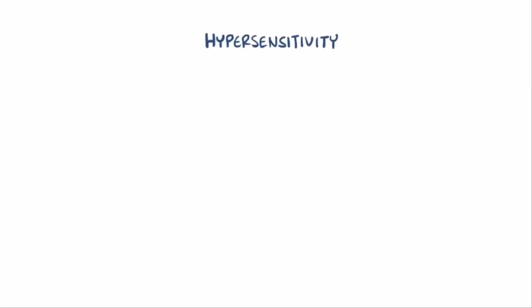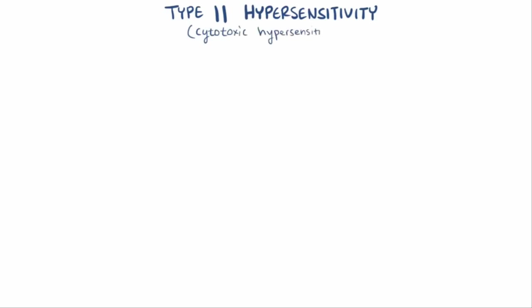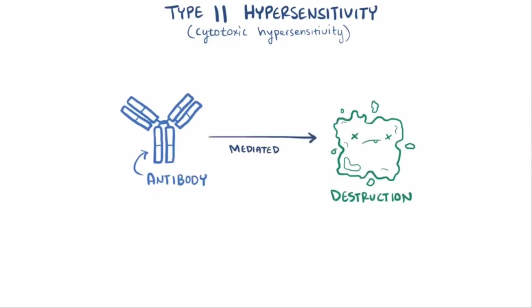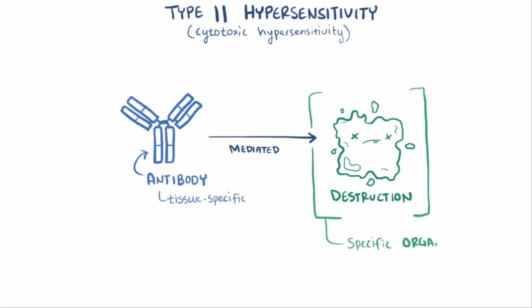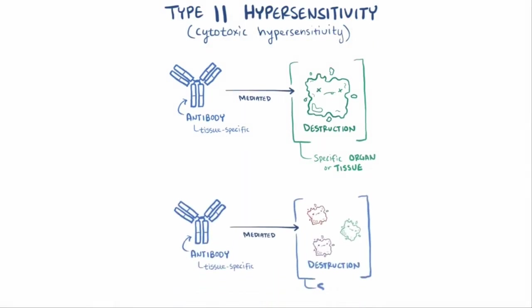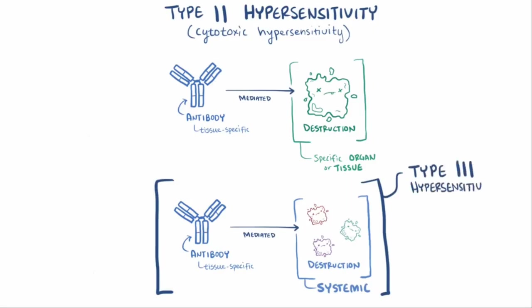There are four different types of hypersensitivities, and the second type, or type 2 hypersensitivity, is sometimes called cytotoxic hypersensitivity because a lot of disorders caused by this hypersensitivity involve antibody-mediated destruction of healthy cells. These disorders tend to be tissue-specific, meaning that the antibodies are generally specific to one type of tissue or organ. There are other antibody-mediated hypersensitivities that are systemic, but these are generally type 3 hypersensitivities.